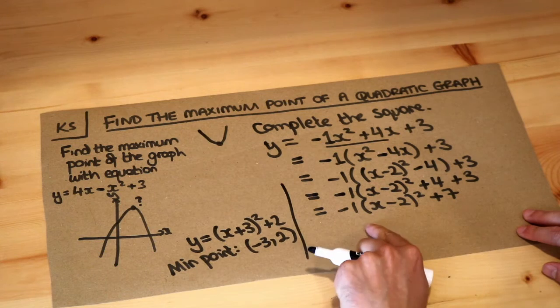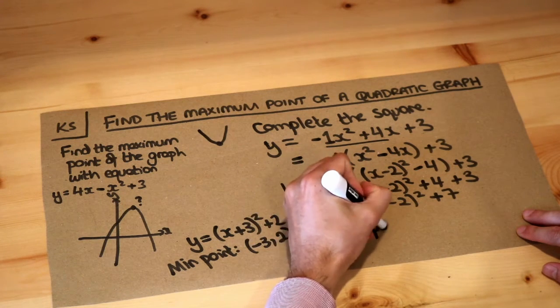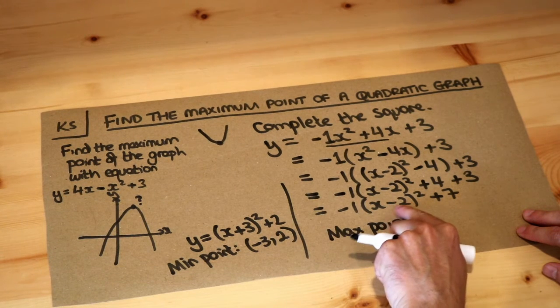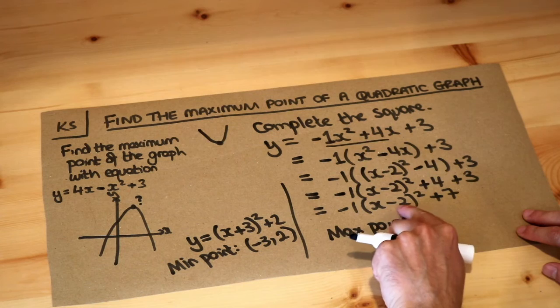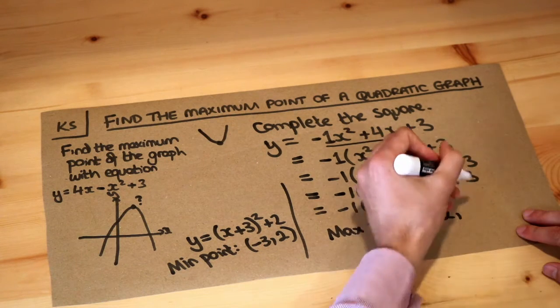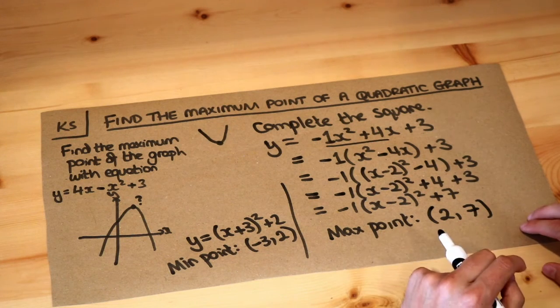Now, it's exactly the same here to find the maximum point. The maximum point, we just ignore that minus 1 at the front, and we negate the number just after the x, so that minus 2 becomes plus 2, and we use the number at the end to get 7 as the y value. And that is the final answer.